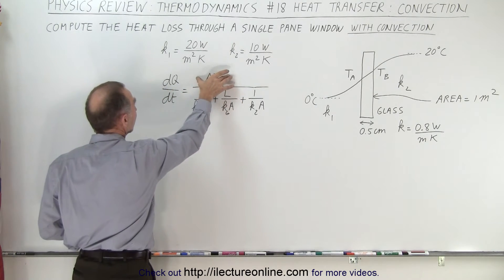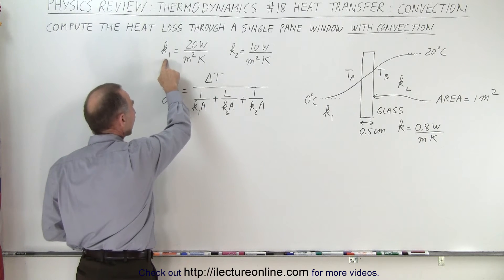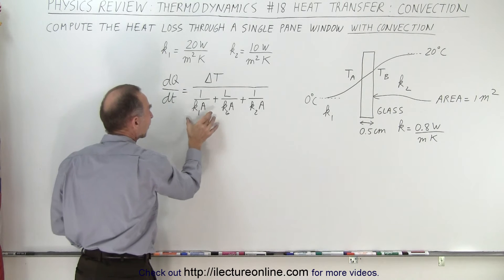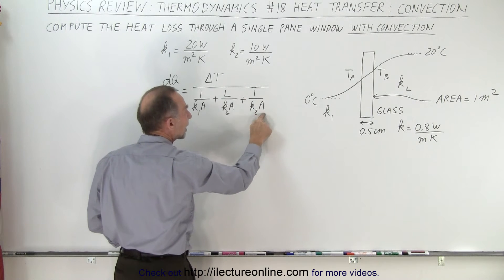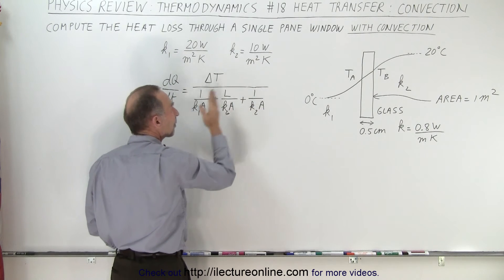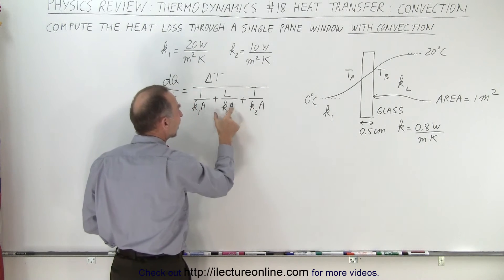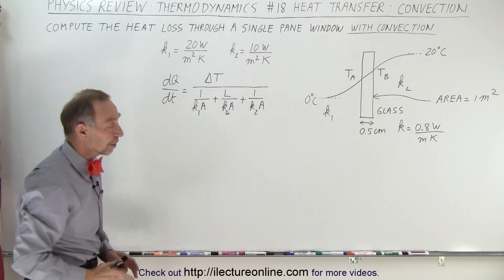It's the difference in the temperature divided by 1 over the convection constant times the area of the glass. We have that for the outside and we have 1 over k times a for the inside, and then we still have the length of the path through the glass divided by the conductivity constant of the glass times the surface area of the window.